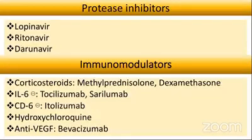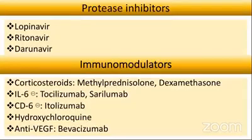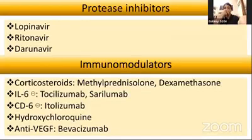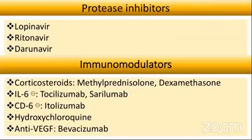Protease inhibitors: long viral proteins must be cut into smaller functional proteins by the protease enzyme. Blocking protease prevents this. Drugs used include lopinavir, ritonavir, and darunavir — typically used for HIV. Since protease is common to many viruses, these drugs can be applied to COVID as well.